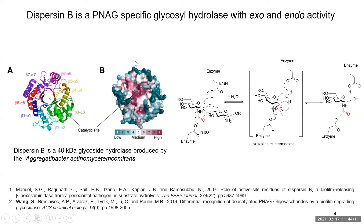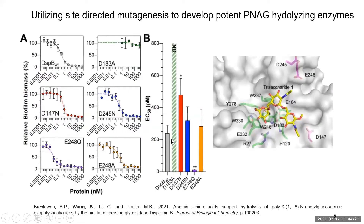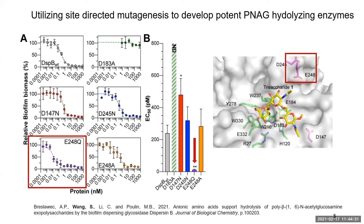More interestingly, we found Dispersin B can function with both exo and endo activity depending on different substrates. Our lab has been using site-directed mutagenesis to develop a much more potent Dispersin B mutant. After obtaining the mutant E248Q, it demonstrates a much better biofilm dispersion effect — the EC50 value compared to the wild type is increased tenfold.